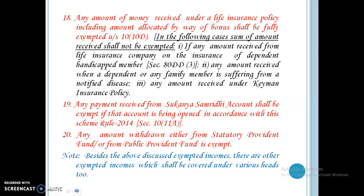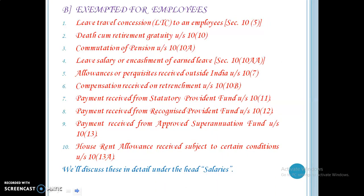Besides the above discussed exempted incomes, there are other exempted incomes which shall be covered under various heads. Next, we will discuss income exempted for employees. There are certain incomes like leave travel concession to an employee, death-cum-retirement gratuity, commutation of pension, leave salary or encashment on leave, allowances for purposes received outside India, compensation received on retirement, payment received from statutory provident fund, payment received from recognised provident fund or approved superannuation fund, and house rent allowance received subject to certain conditions. We will discuss these in detail under the head salaries.